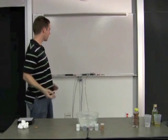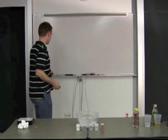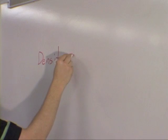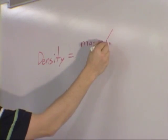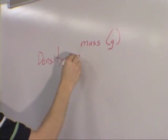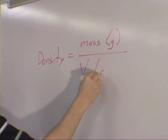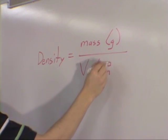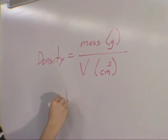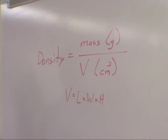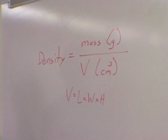Now, if we look at the actual equation for density: density equals the mass, which is measured in grams, divided by the volume, which is measured in centimeters cubed. Volume is traditionally found by multiplying the length times the width times the height.